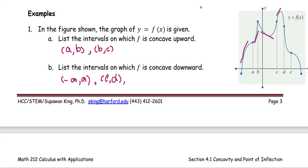The next part between d and e, the tangent line is below the curve. And beyond e, the graph is below the tangent line, so it's concave downward.